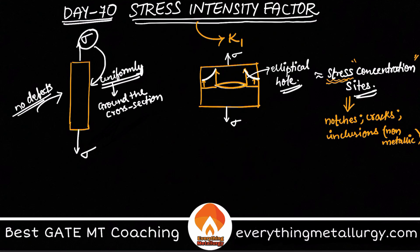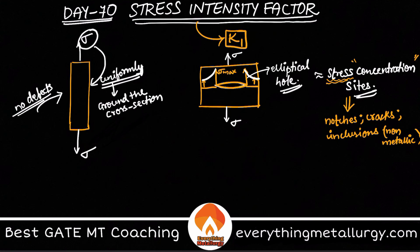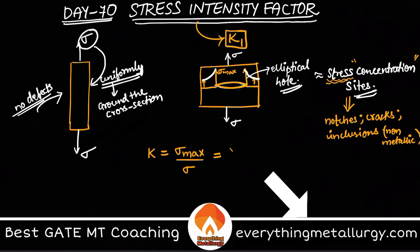Mathematically, the stress intensity factor K is nothing but the ratio of the maximum stress at the tip of the crack or stress concentration site to the applied load. So you can write K equals sigma-max divided by sigma, and this can be written as 1 plus 2a divided by b.